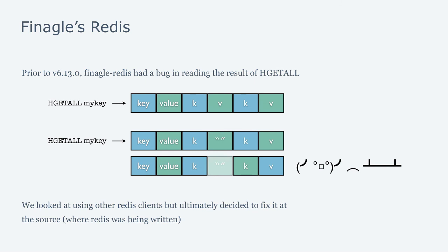One thing we struggled with early on was Finagle's Redis driver — there was a bug we had to fight. We had Rails writing into Redis, and when Rails writes an empty key Redis is fine, but when Finagle tries to read an empty key its keys-and-values offset gets messed up. This was apparently fixed in 6.13, but our server is still on 6.2 so we need to upgrade. We looked at other Redis clients but they were tricky to integrate, so we fixed it on the Rails side — making sure Rails always writes a key. When Redis returns a hash value you get keys and values as a sequence, but if a value is missing Redis assumes the next key is the value for the first key, gets offset wrong, reaches the end expecting another value, and blows up.